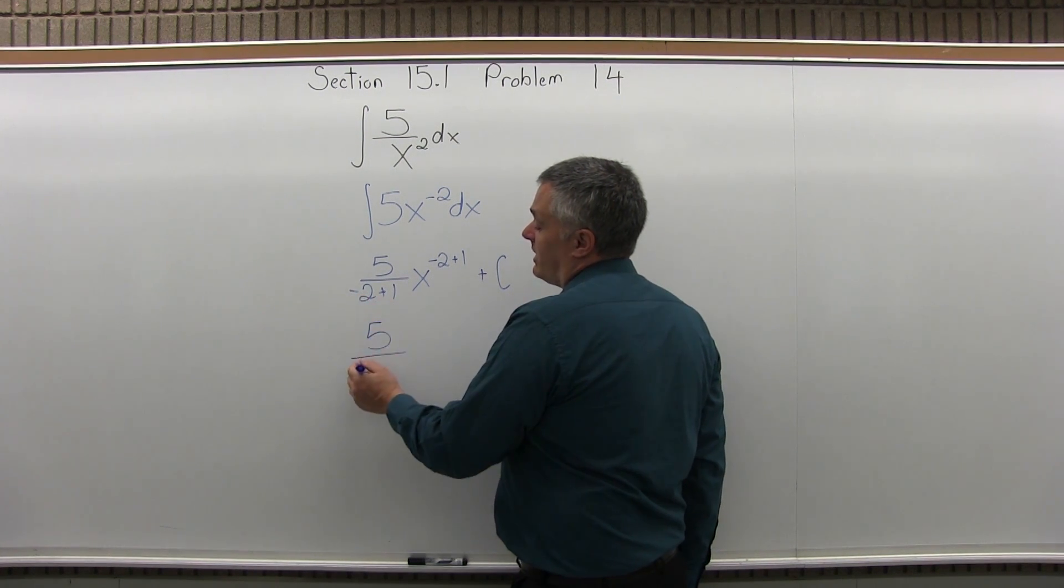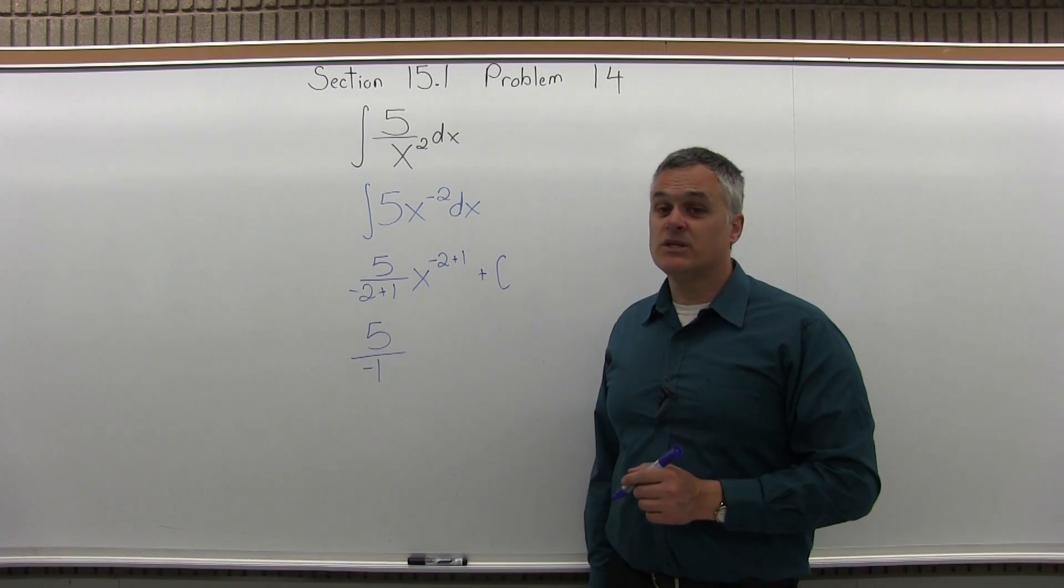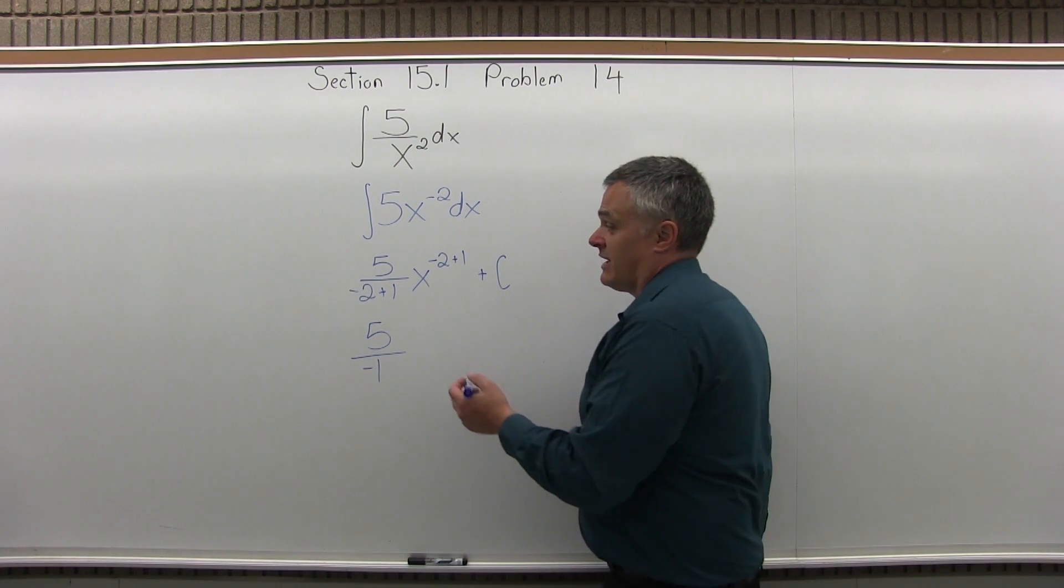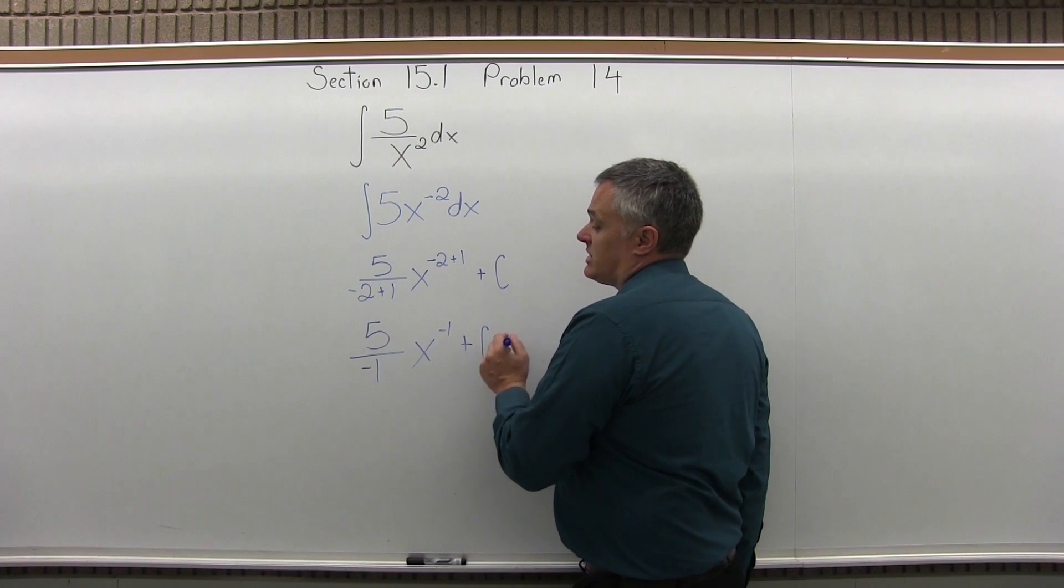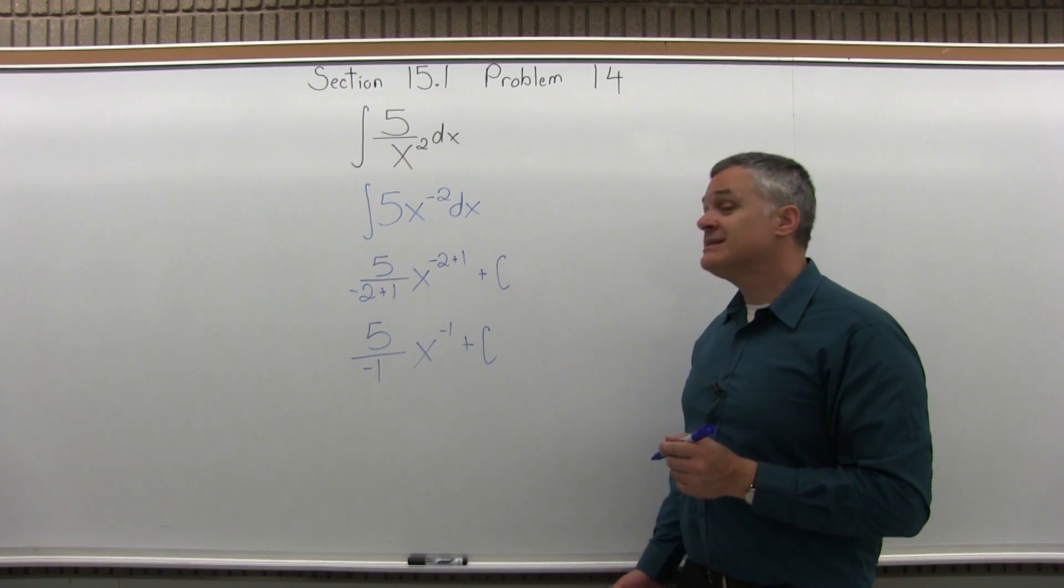Here in number 14, negative 2 plus 1 is minus 1. Minus 1 in the denominator is fine. You can have that any time. And then x to the minus 2 plus 1 is minus 1, plus you have some type of constant. That is the answer.